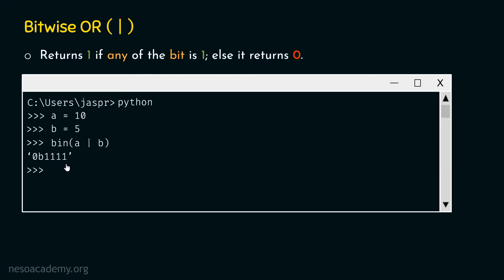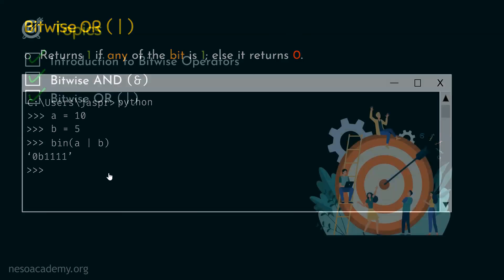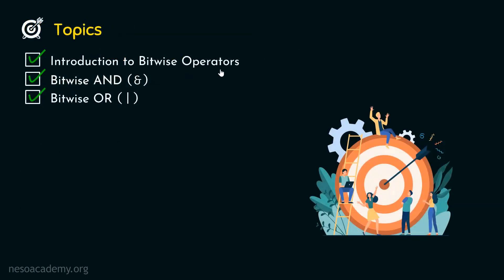I hope this concept is completely clear. We have learnt what a bitwise operator is and seen the list of all bitwise operators in Python. We have understood the bitwise AND operator and the bitwise OR operator. In the next presentation, we will understand the bitwise NOT operator and the bitwise EXOR operator. This is all for this lecture — thank you for watching, and I will see you in the next presentation.